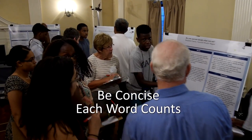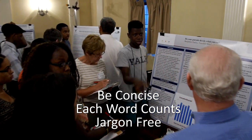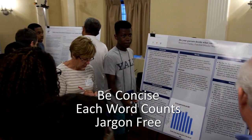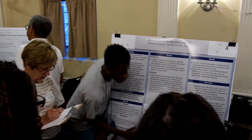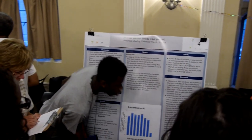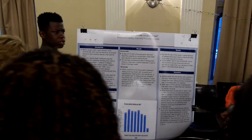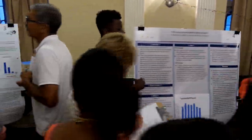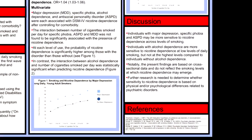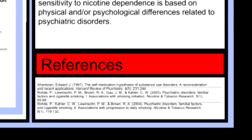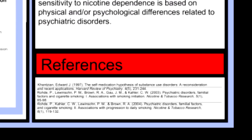We also aim to be jargon-free. In scientific writing, if we're describing the previous work of other researchers, we need to include citations for that work, often with a full bibliography listed at the end of the poster.